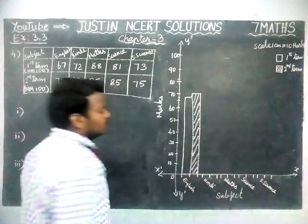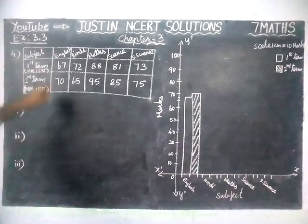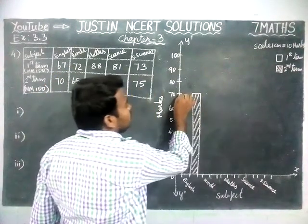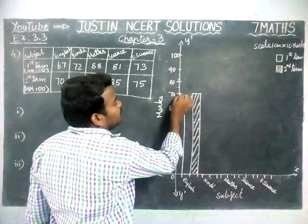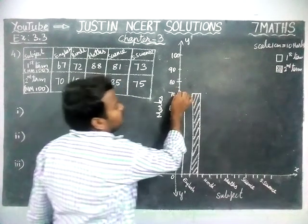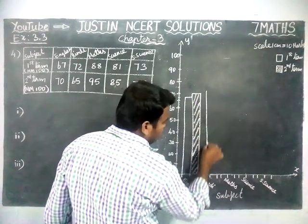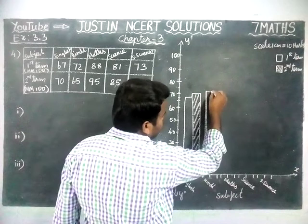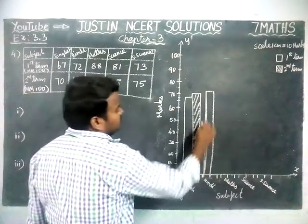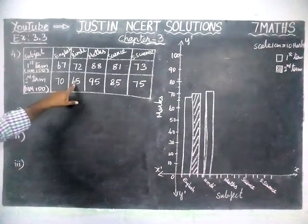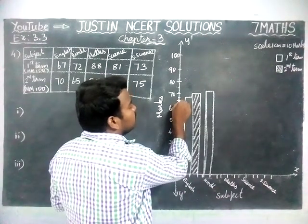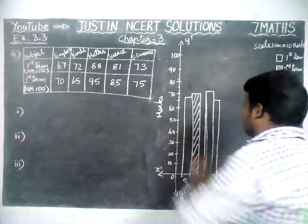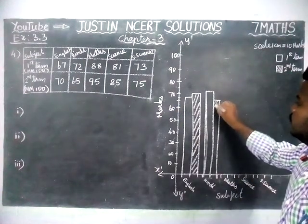Now, Hindi subject. For Hindi, first term has 72 marks. This is 70; in between 70 and 80, this is 75 marks. After 70: 1, 2 — this point is 72. So we draw the bar up to 72 for first term. Next, second term is 65 only. After 60, the middle point is 65. So we draw up to 65 and use cross lines for second term.